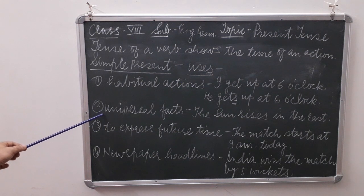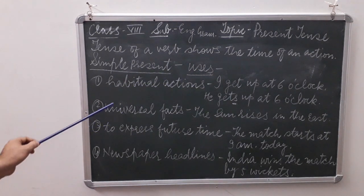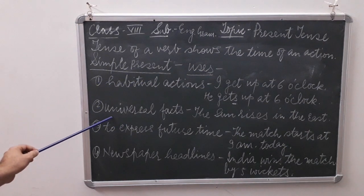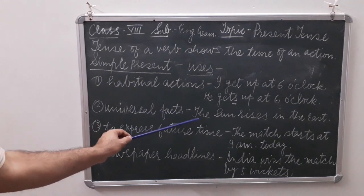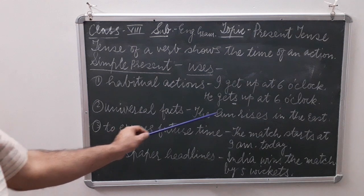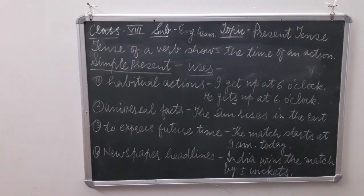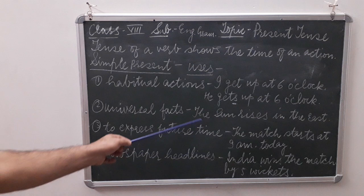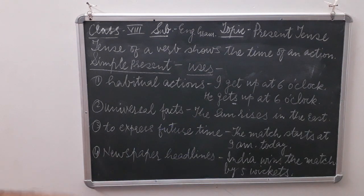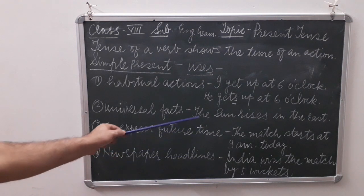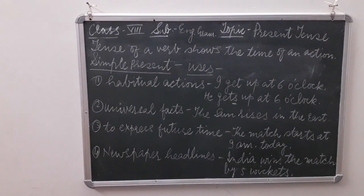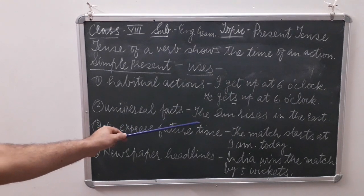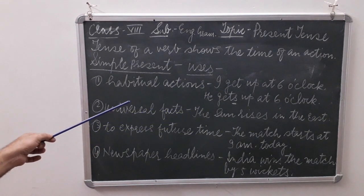Use number two: simple present tense is also used to express universal facts. For example, 'The sun rises in the east' — that is a universal fact. 'The sun sets in the west.' 'The stars shine in the night.' These are universal facts, admitted by all people.